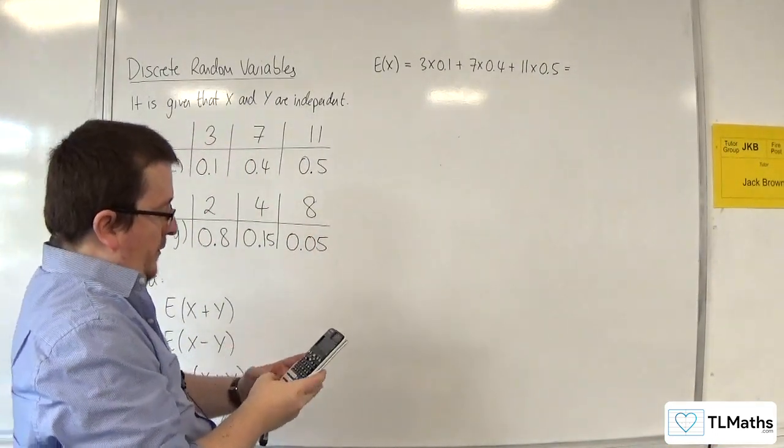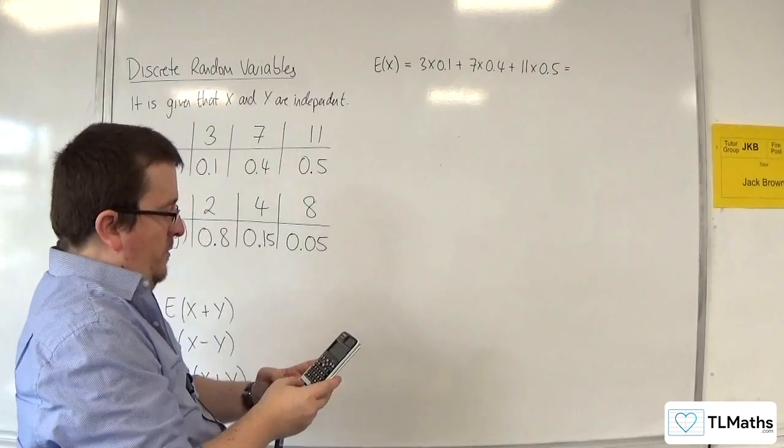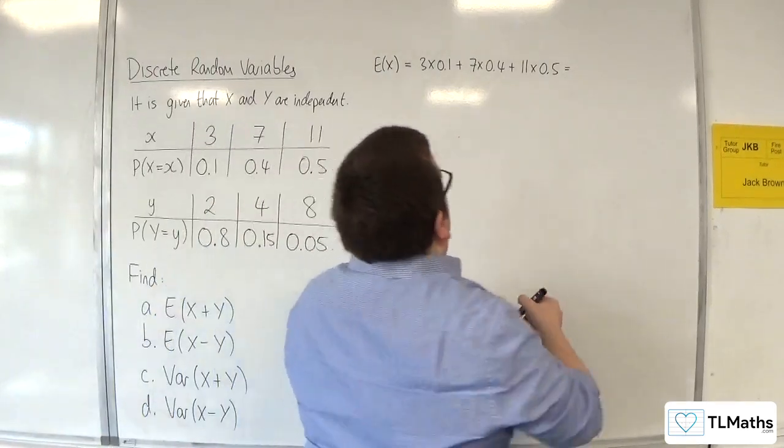So 3 times 0.1 plus 7 lots of 0.4 plus 11 times 0.5, and we get 8.6.